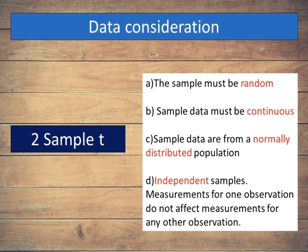The sample data should be selected randomly. If your data are not collected randomly, your results may not represent the population. Sample data must be continuous. Continuous data has an infinite number of values between any two values. Sample data are from a normally distributed population.